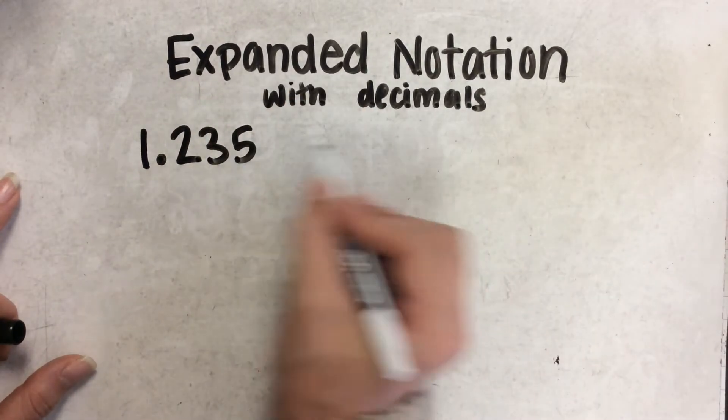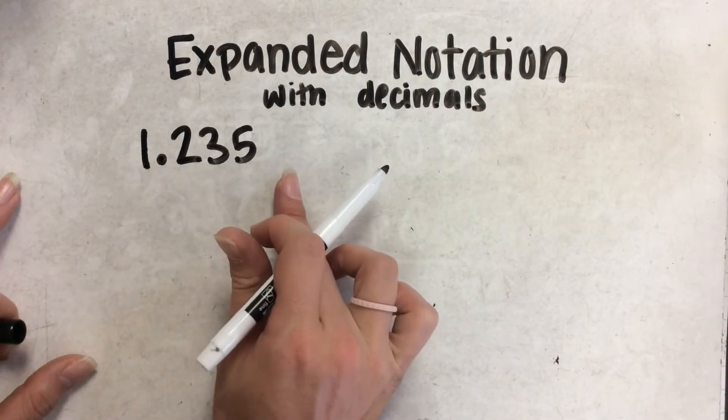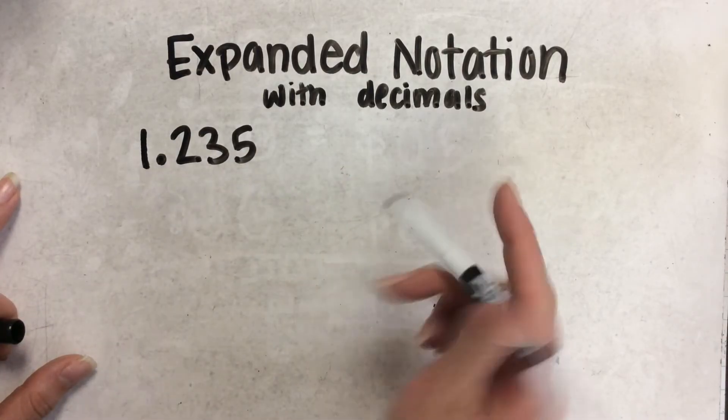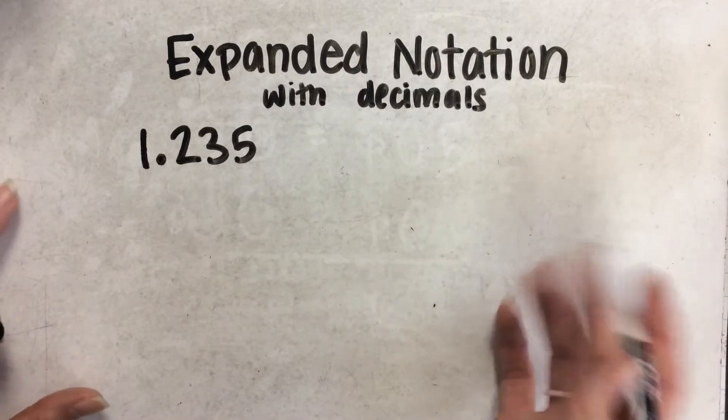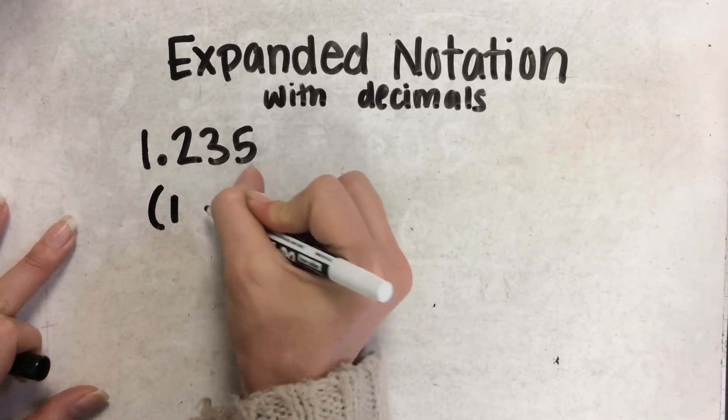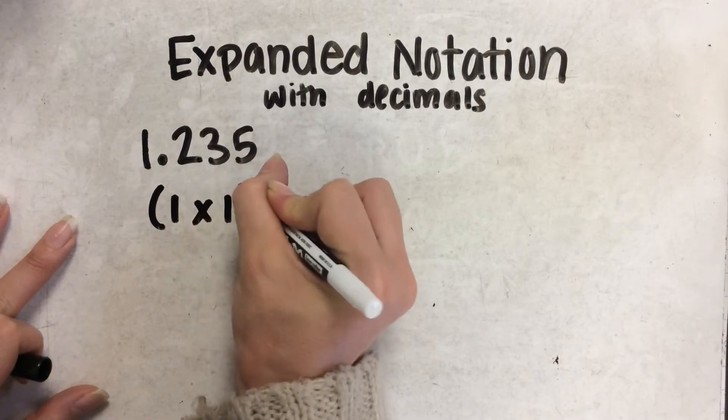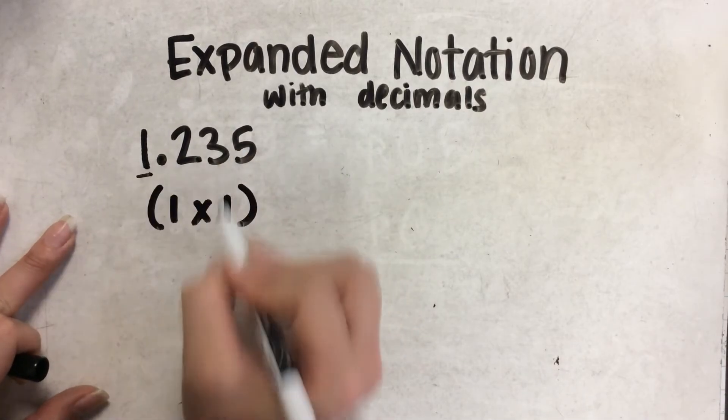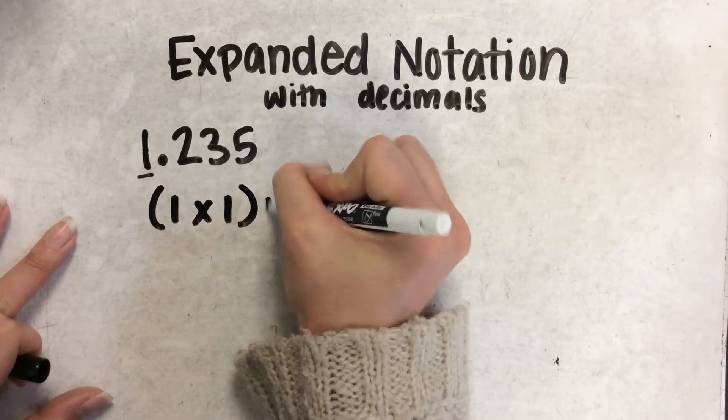We want to split apart each place value and then multiply it by its place. So, we'll start with the digit, and you do 1 in parentheses times 1 because the value is the ones place.